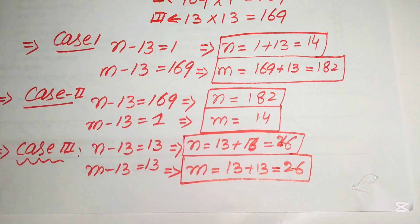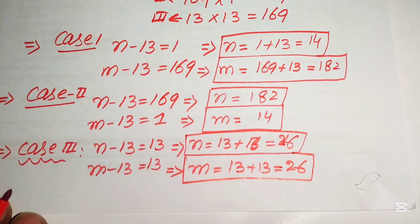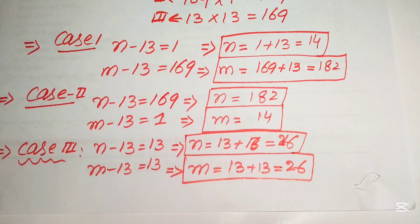So the final answer gives us three possible pairs of (m, n): (182, 14), (14, 182), and (26, 26). Thank you so much for watching this video — please subscribe to my channel for more exciting videos.